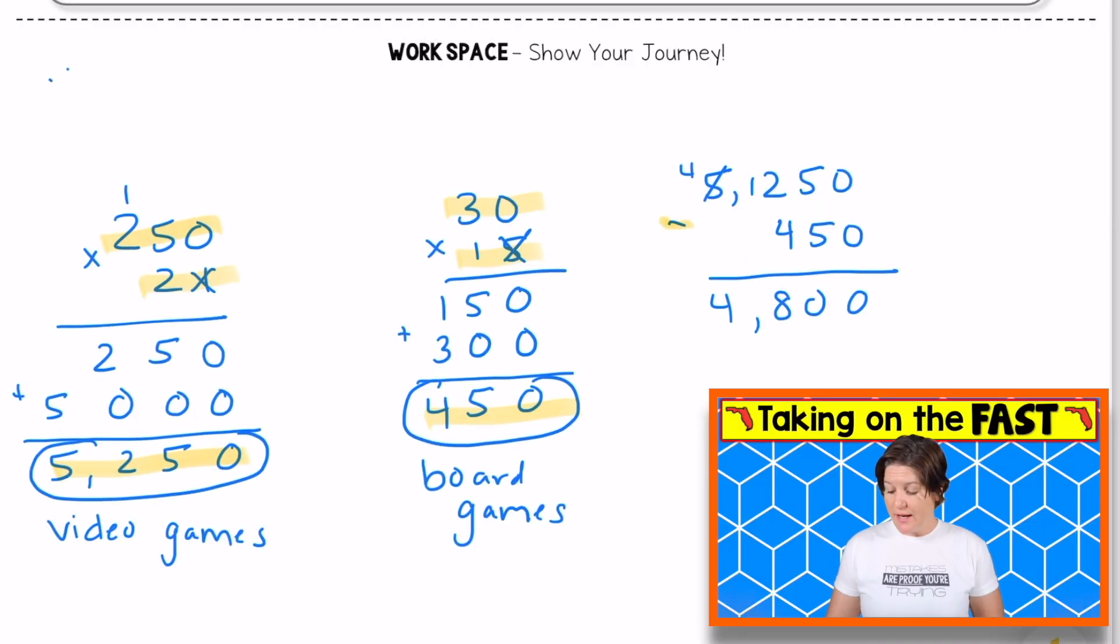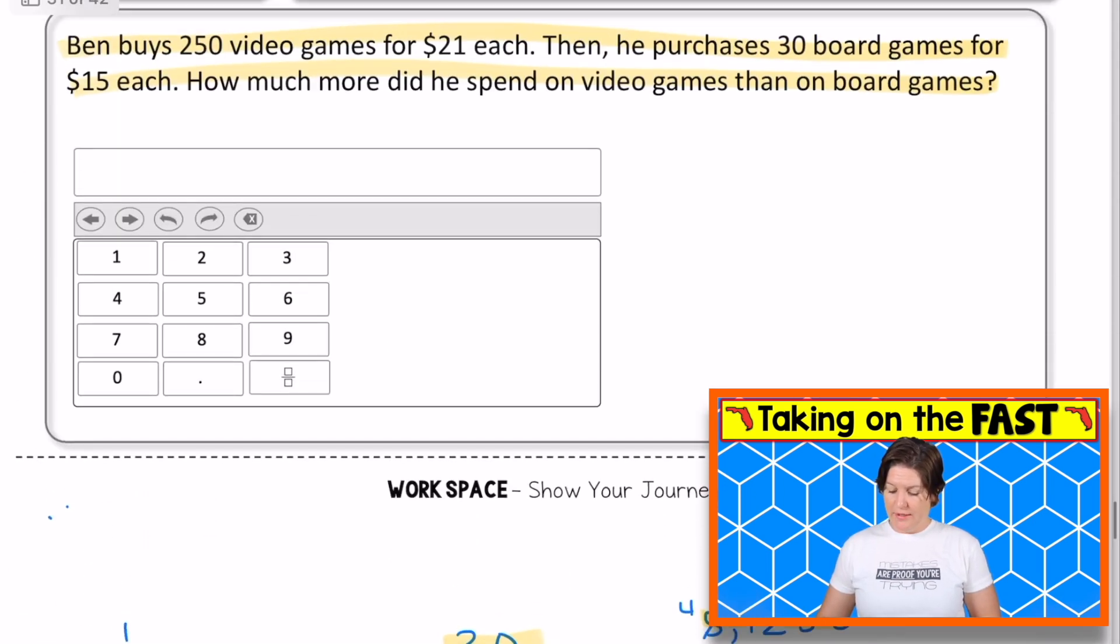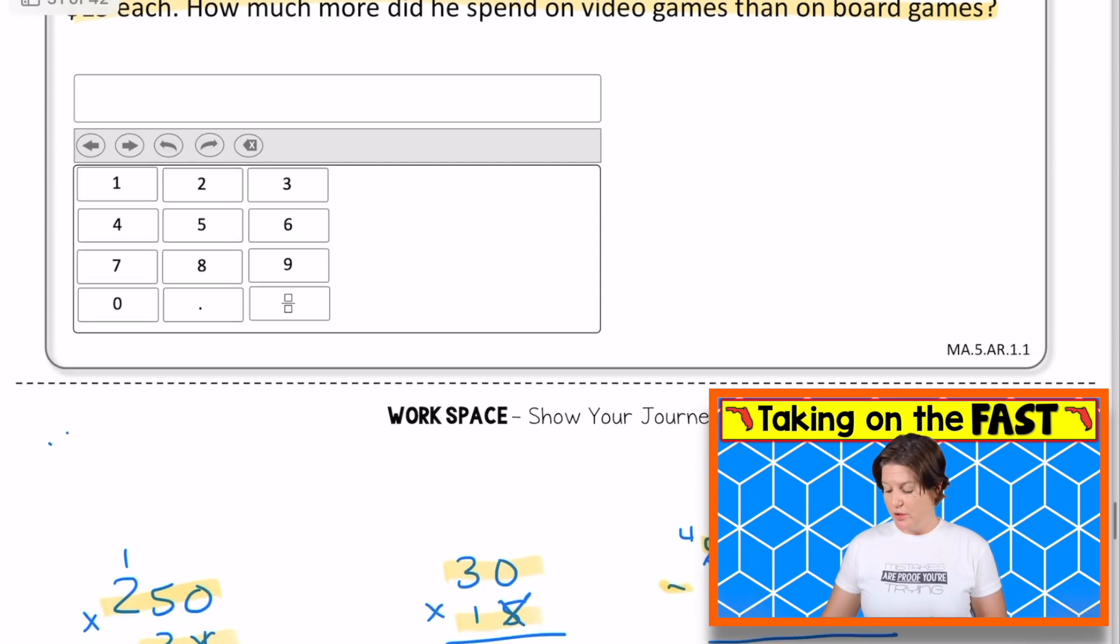Then I took those two values and I subtracted them. 5,250 minus 450 equals $4,800. So that is how much more he spent on video games than on board games, which is what the question is asking.